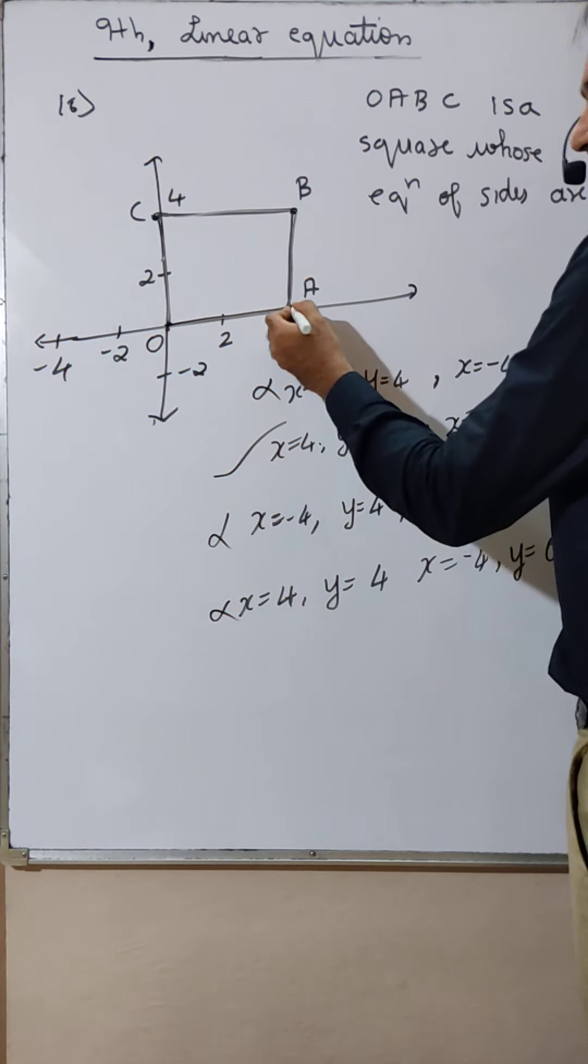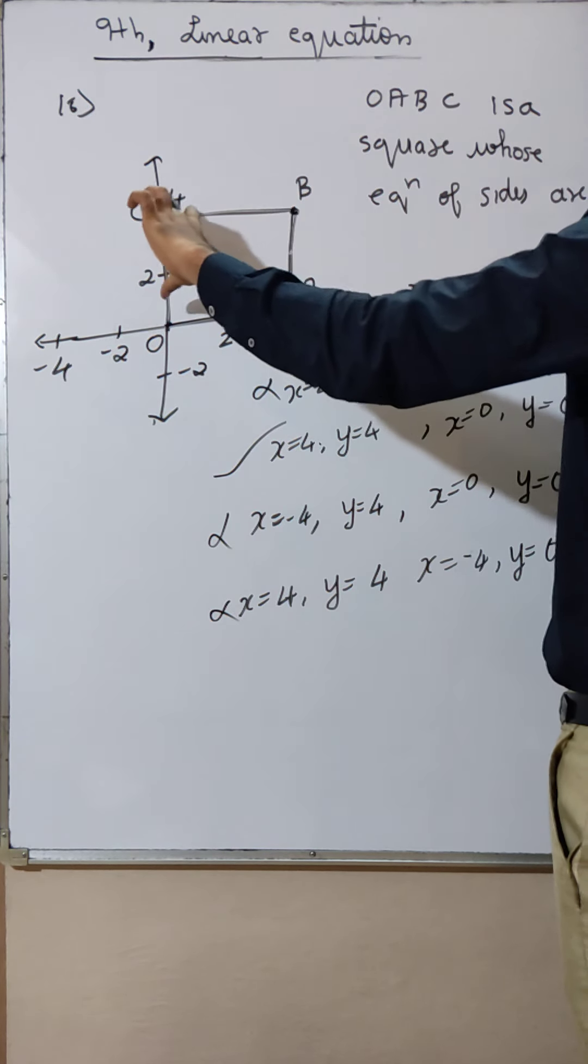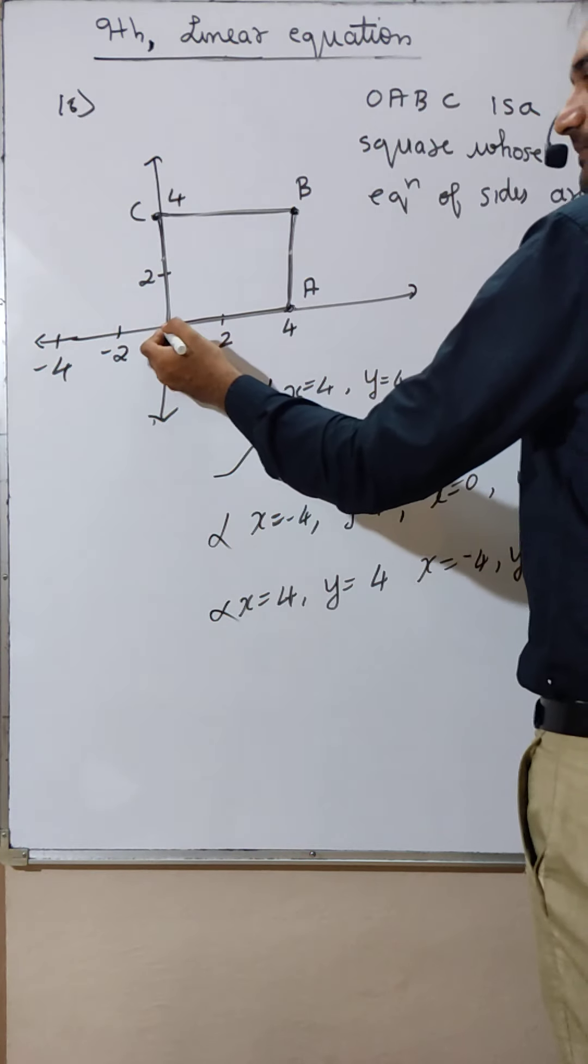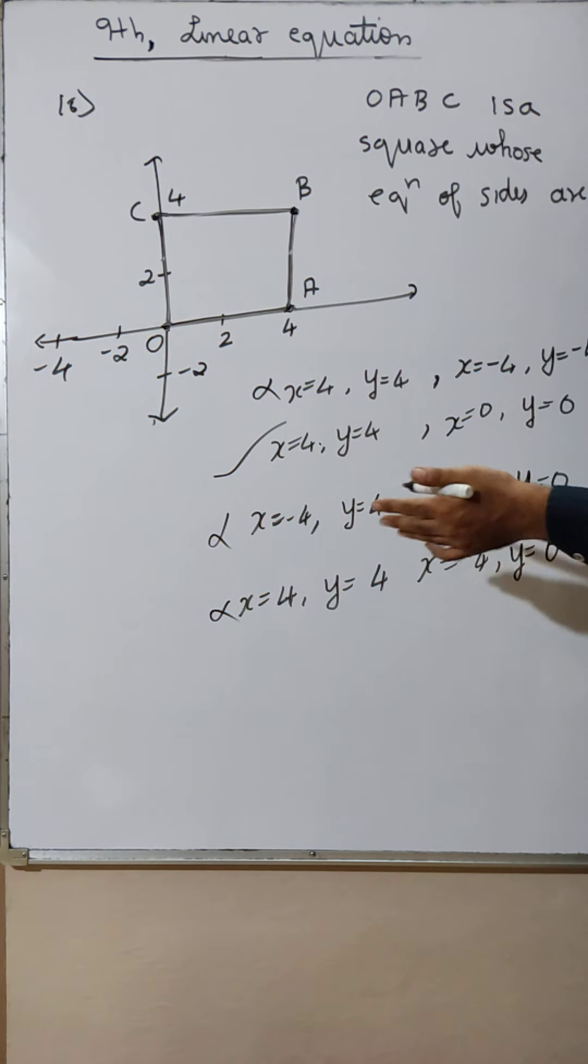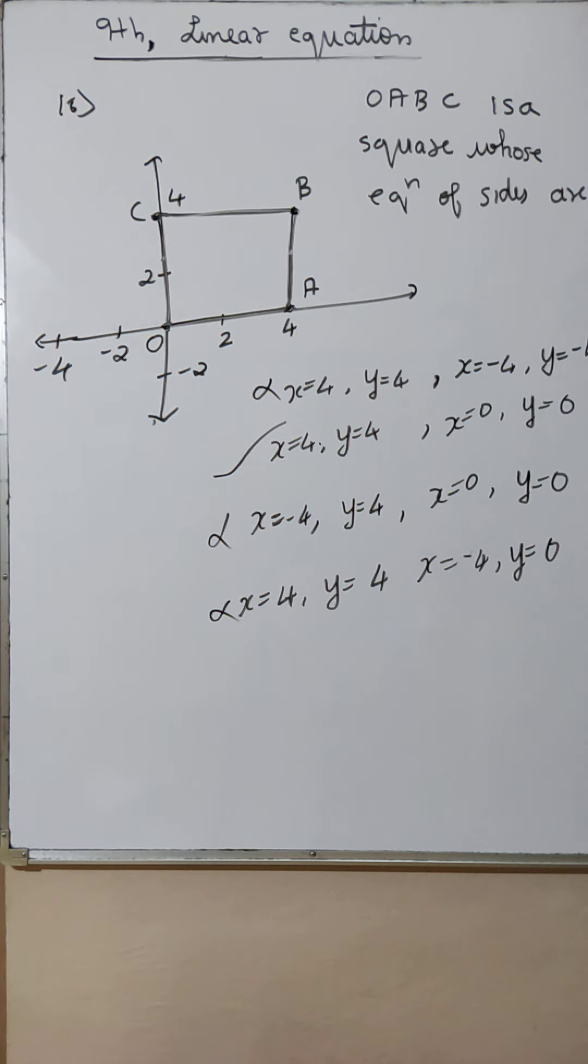x4 hai, x4 hai. y4 hai, hai y4. Idhar. Idhar bhi y4 hai, idhar bhi y4 hai. x0 hai, hai 0 x. y, y0 hai, hai y bhi 0. Satisfy ho raha hai. Okay? Satisfy ho raha hai. Done.